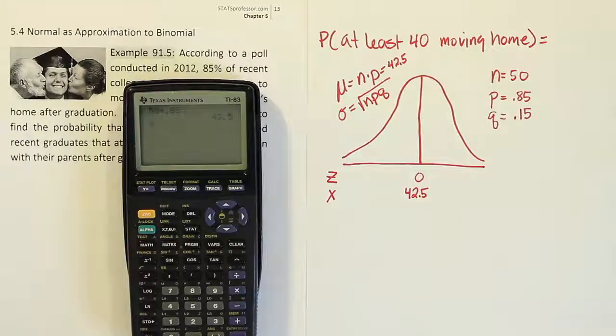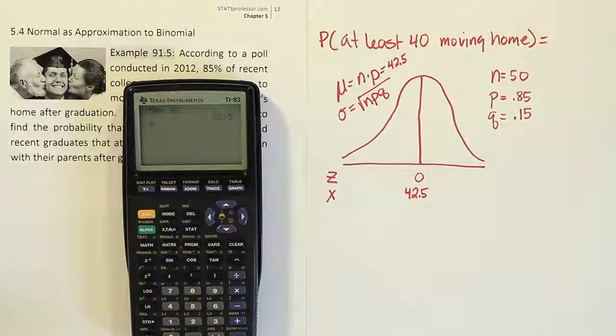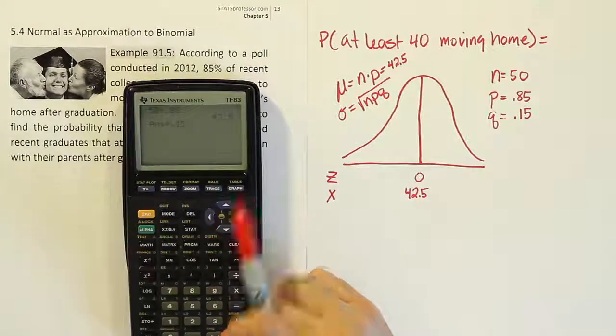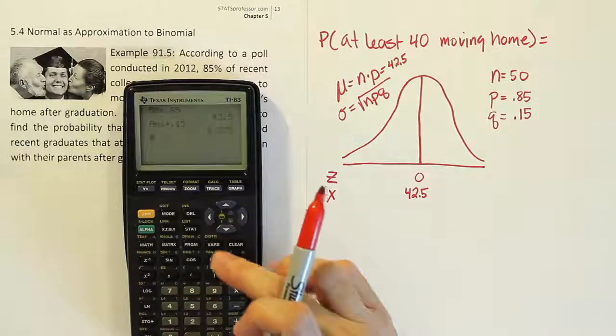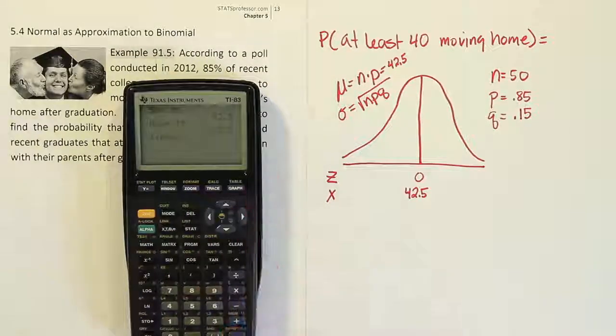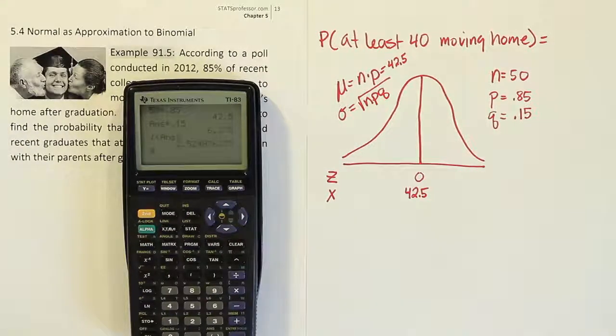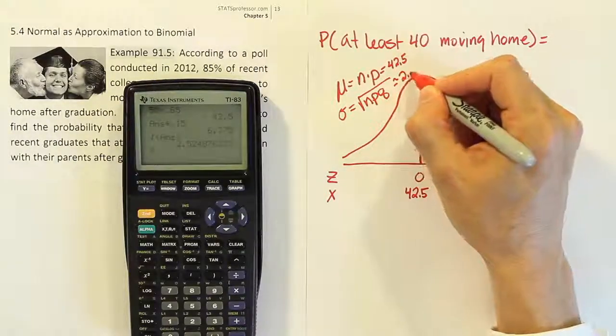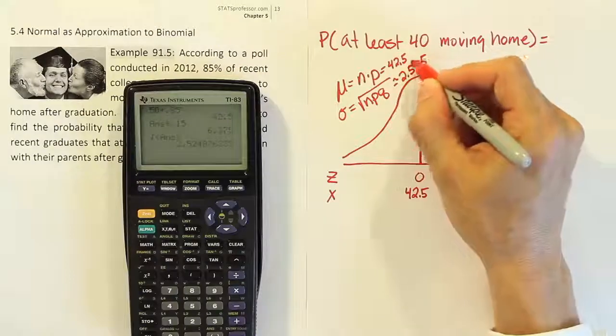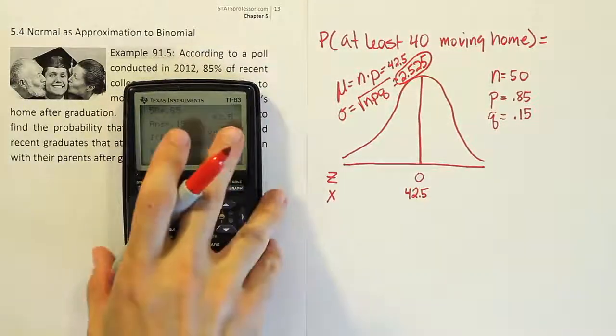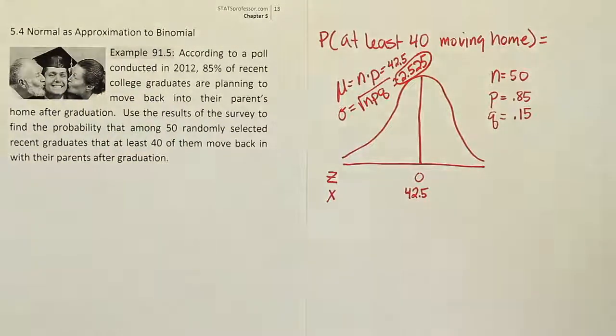What about the standard deviation? That's n times p. If we just do that times q, which will be times 15%, then we take the square root of that. We will end up with the answer for standard deviation. It's approximately 2.525. I'm going to need that value in my next step, so I want to hang on to that. We've calculated our mean. We have our standard deviation.